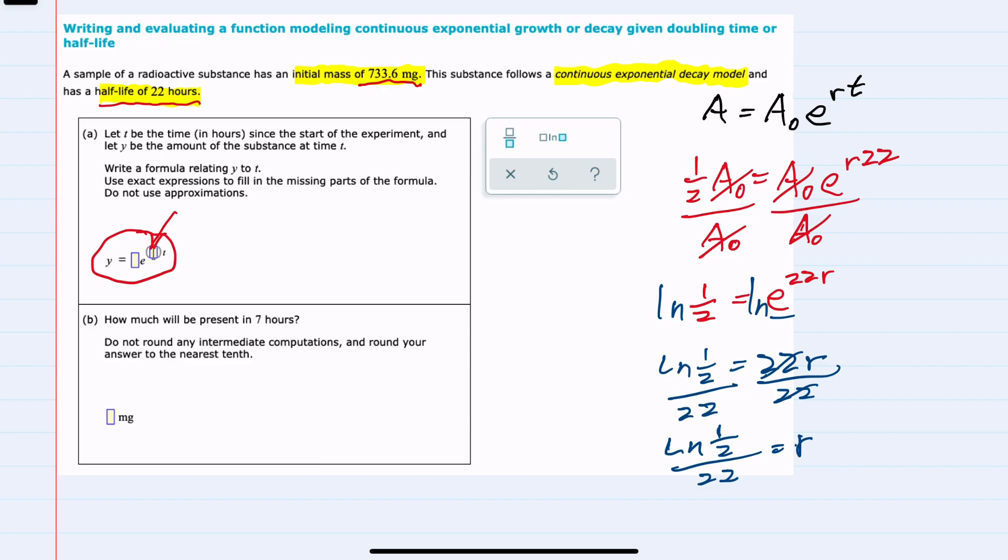We now have everything to answer question a. That formula will be y equals the initial value, 733.6, times e raised to the r, which we now know is the ln of one-half over 22, times t.